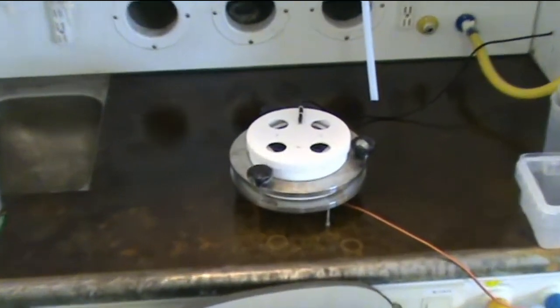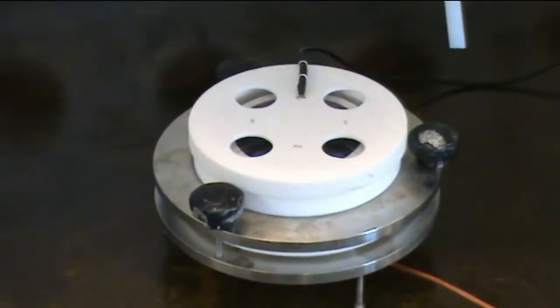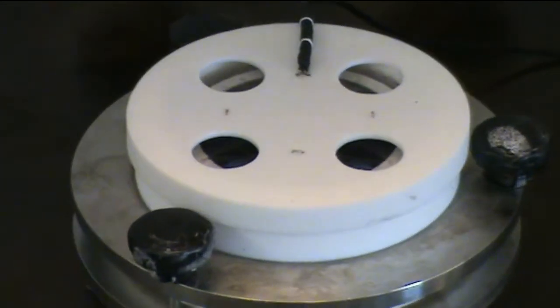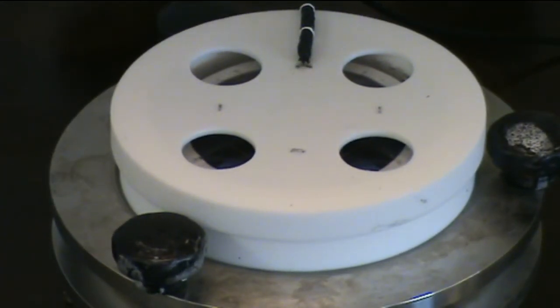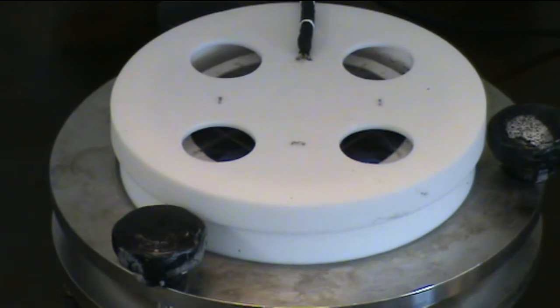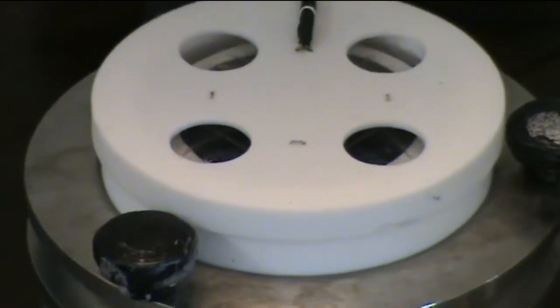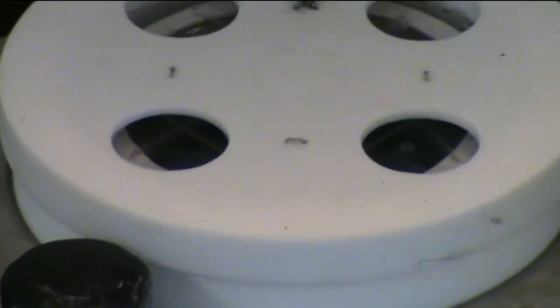I will start the etching by switching on the etching current from the power supply unit. You can see hydrogen bubbles being produced during the etching.